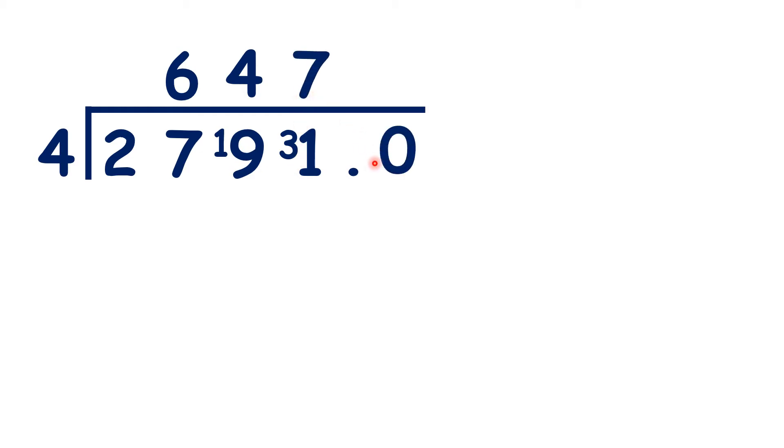So let's extend our place values with a decimal point and then a 0. So now we have somewhere to write the remainder 3 we got from dividing 31 by 4. And because we now have a decimal point in our question, we need a decimal point in our answer.